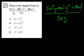5x to the third y plus 20x squared y squared plus 20xy to the third, everything divided by 5xy. So 5xy actually goes into every one of these terms, right? So let's just divide the numerator and the denominator by 5xy.